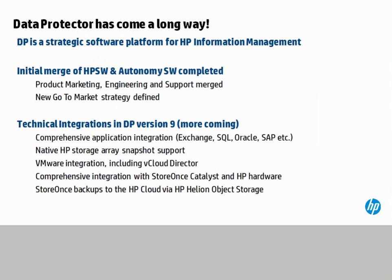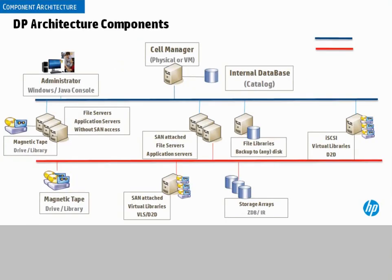This is the overall architecture for Data Protector. At the top center you can see the cell manager — a collection of services that can run either on a physical server or on a virtual machine. The fundamental thing it manages is our internal catalog database. The cell manager will be on the local area network, depicted in blue, and it is the server that supports the user interface, the administrator's console, as the management facility for Data Protector.